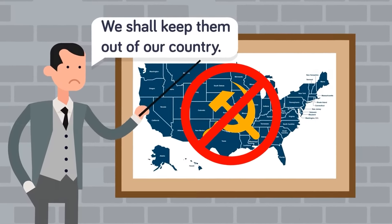1970s. The decade would start with the Kent State shootings that saw several student protesters die at the hands of the National Guard. 1970 and 71 also saw a shocking flood of celebrity deaths, with Jimi Hendrix, Janis Joplin, and Jim Morrison all dying of drug overdoses at age 27. The voting age was officially lowered to 18, and Richard Nixon became the first president to visit communist China. He was a heavy favorite to win re-election, winning a shocking 49 states over staunch liberal George McGovern. No one paid too much attention to the break-in at the Watergate office complex at the time, but Nixon's second term would be very different from his first.